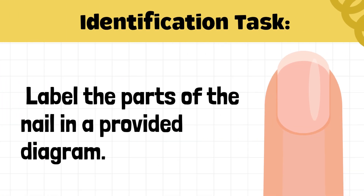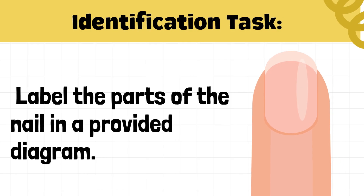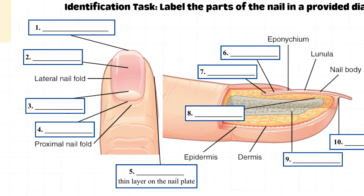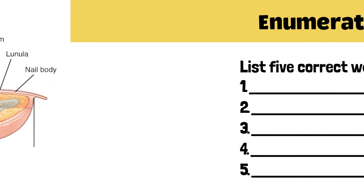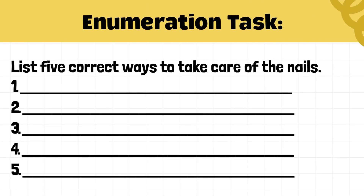Individual assessment: Identification task — label the parts of the nail in the provided diagram. Enumeration task — list five correct ways to take care of the nails.